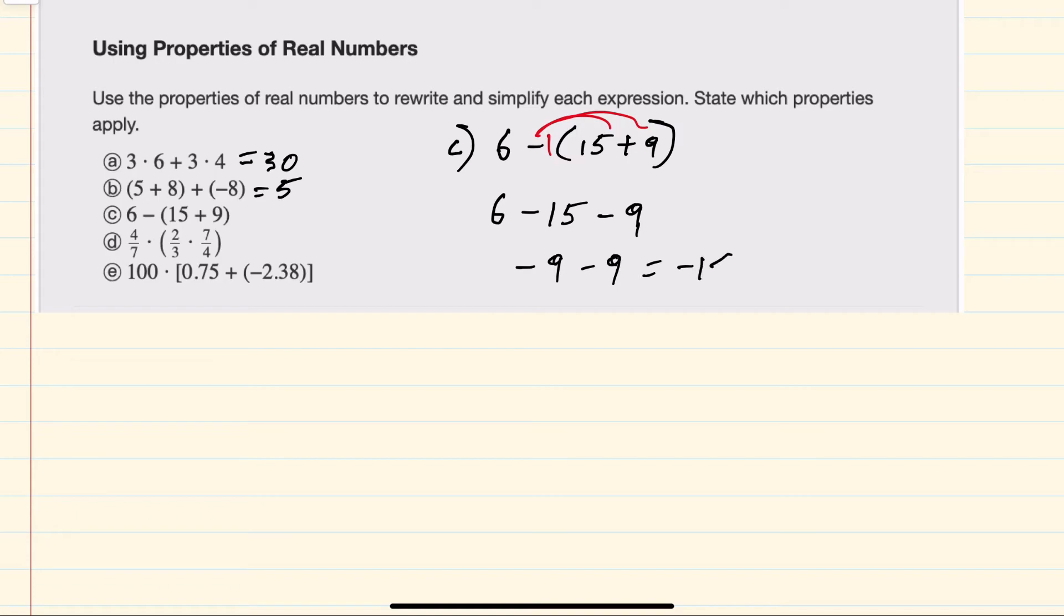And then for D, we know that we can change the association, and we can also change the order of multiplication. So I could start inside the parentheses by using the commutative property,